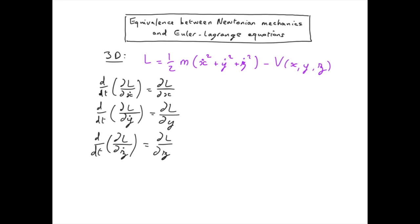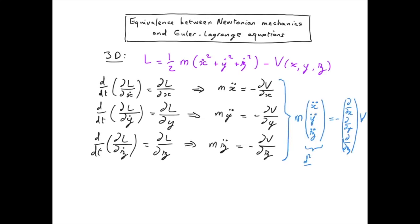Substituting the Lagrangian into each of these equations, we get the component forms. We can, of course, combine these three equations into a vector form. This is Newton in 3D.